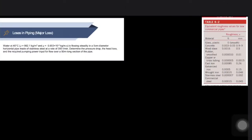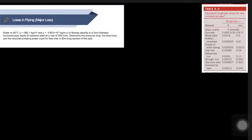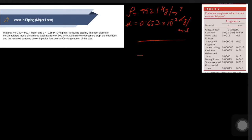Let's start with Example 1. Water at 40°C has a density of 992.1 kg/m³. We are assuming steady flow, and because the density is constant it is incompressible. The dynamic viscosity is 0.653 × 10⁻³ kg/(m·s). The pipe has a diameter of 5 cm, is horizontal, made of stainless steel, and the flow rate Q is 300 liters per minute.